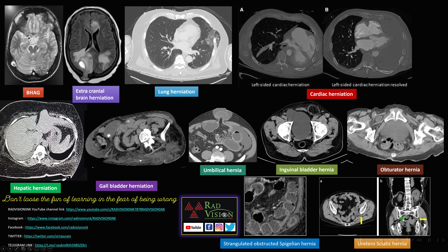These are the different spectrum of cases we have seen: brain herniation into arachnoid granulation, extracranial brain herniation, intercostal lung herniation, cardiac herniation onto the left side, hepatic herniation, gallbladder herniation, strangulated obstructed umbilical hernia, inguinal bladder hernia, obturator hernia, strangulated obstructed spigelian hernia, and uretero-sciatic hernia.